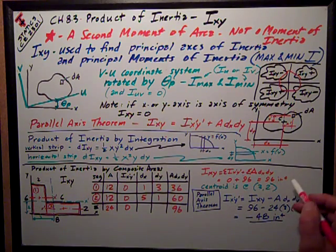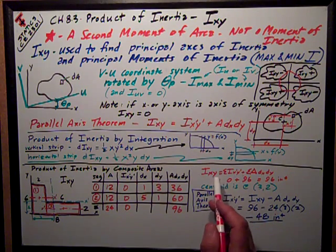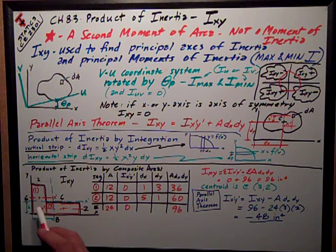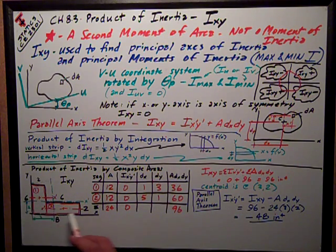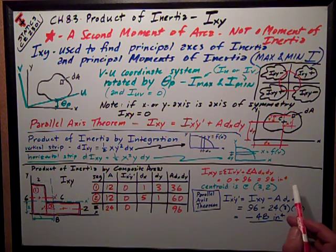Let's think about the signs of these two things real quickly and compare them. In this case, the entire shape lies in the first quadrant. So IXY product of inertia has got to be positive, which it is.